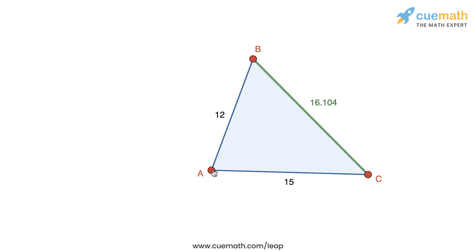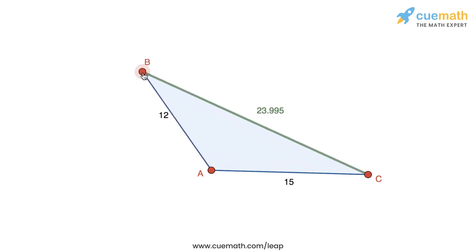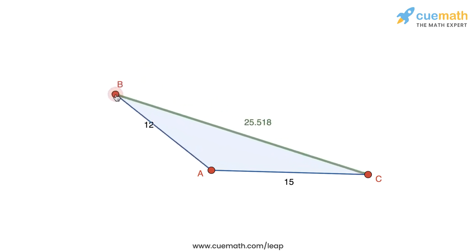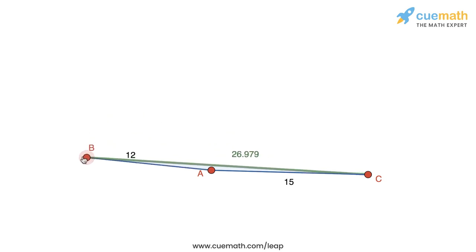Observe the angle that is formed at the vertex A. If I increase that angle like this, we see that BC increases.